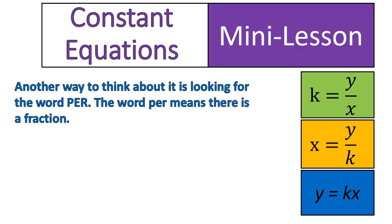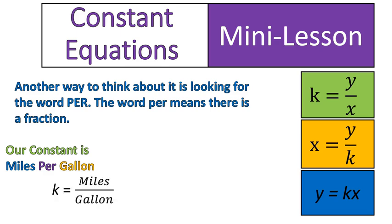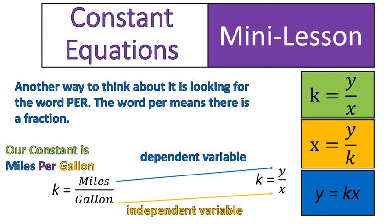Let's look at another way to think about it is the word per. The word per means that there's a fraction, one thing divided by another thing. Our constant in this example is miles per gallon. And we would write that as a fraction, miles divided by gallons. So if we think about that and look at our original equation, k is equal to y divided by x, we know that our independent variable will be in the denominator, and our dependent variable will be in the numerator. Dependent divided by independent. That's one way of thinking about it. If you write it out in words, miles per hour, the miles depend on how many gallons of gas you have.